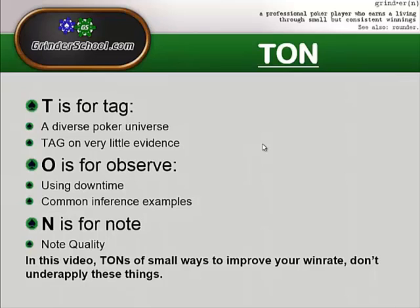You can tag before you've even observed anything specific — you can do it with very little info, with hardly any hands on your opponent. Observation is something you should be doing from the start, always looking for specific things your opponents are doing even when you're not involved in a hand. I'm going to talk about using downtime in this video — always paying attention and never losing track of a showdown. You should be splitting your downtime between table selection and passive observation of opponents, note-taking and that kind of thing.